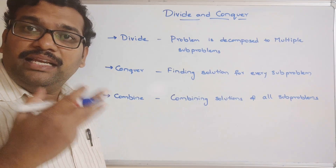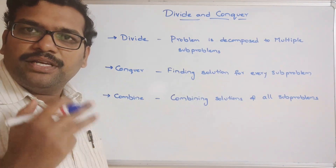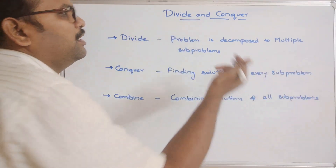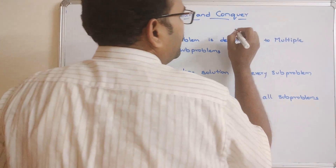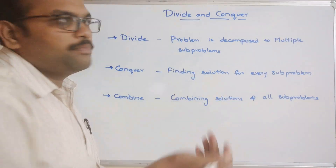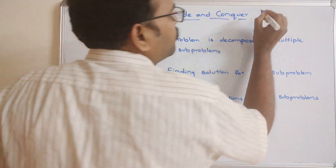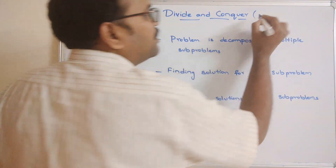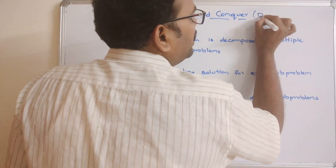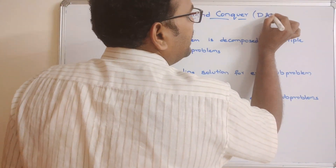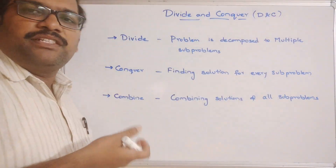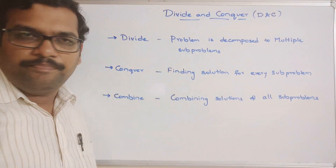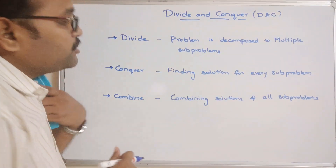So these are the three steps involved in divide and conquer. Some materials or textbooks represent it as D and C — divide and conquer.